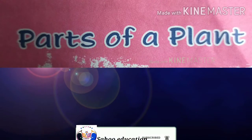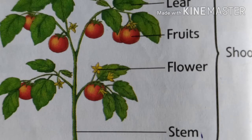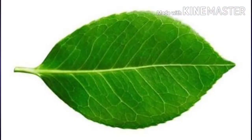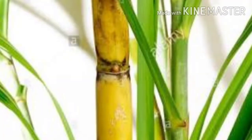Plants make their food in the leaves, but the Stem carries that food to all parts of the plant. The Stem of some plants, such as sugarcane, can also store the food made by the plant — so in some cases the stem stores food.